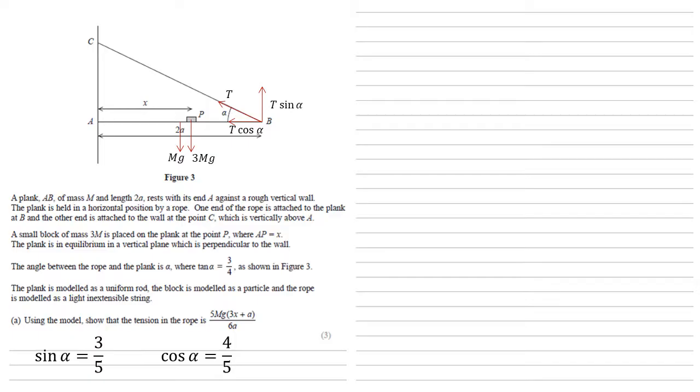We've got everything we need now. As we don't have any information about A yet, it is a good idea to resolve moments around A, because then anything that's happening at A won't matter. So in the anti-clockwise direction, all we've got is the force at B. The perpendicular part of that is T sine alpha. It's at a distance 2A away from A, so the full force is 2A T sine alpha.